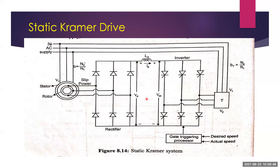In this method, the slip power is taken from the rotor and rectified by using a bridge rectifier to DC voltage by a three-phase diode bridge rectifier. The inductor Ld smooths the ripples in the rectified voltage Vd and also in the current Id. The ripples in the current can be minimized or suppressed by using this inductor, which acts as a filter.